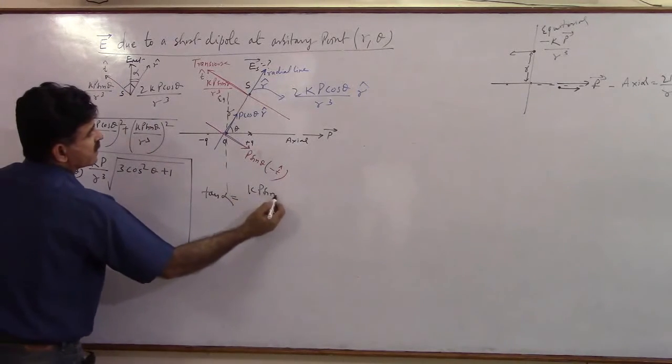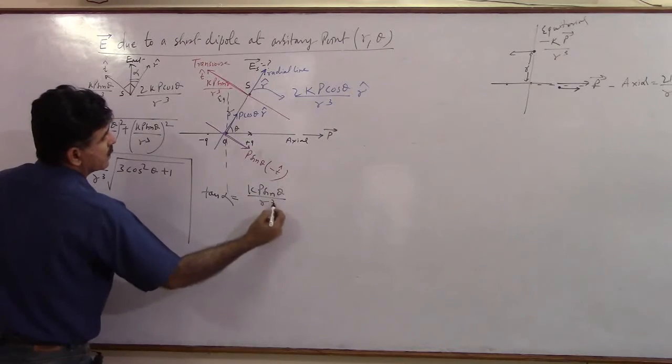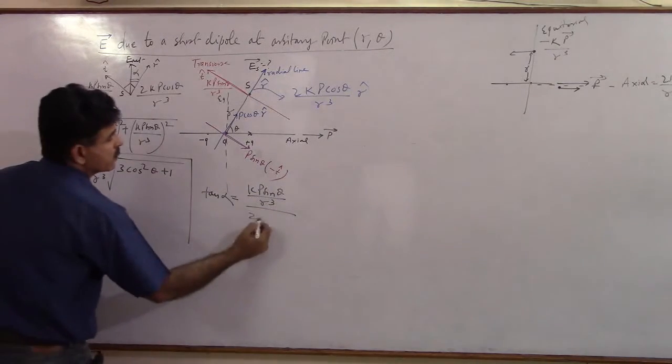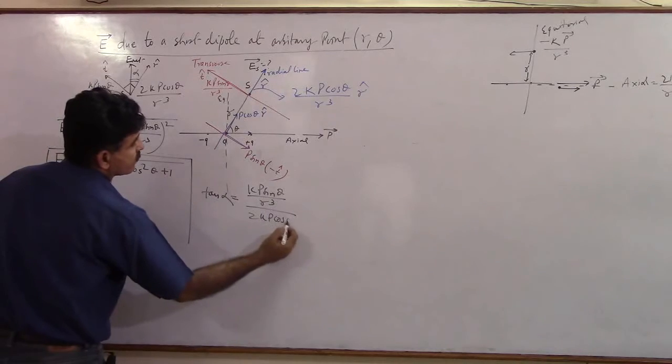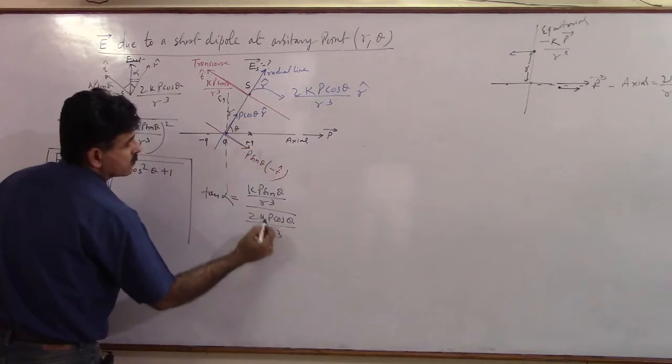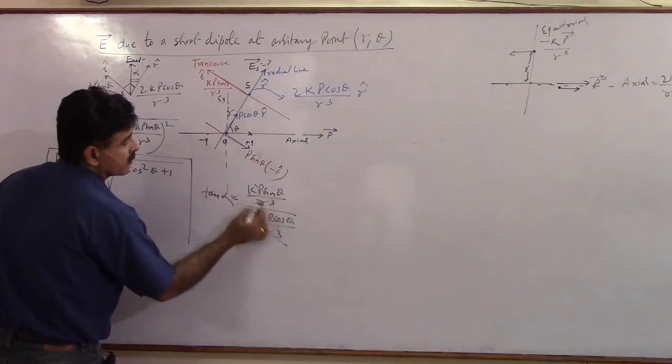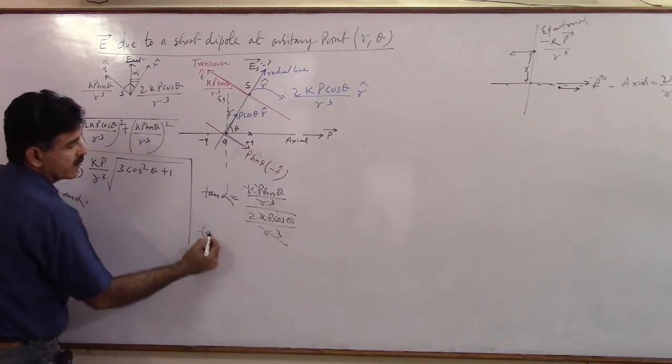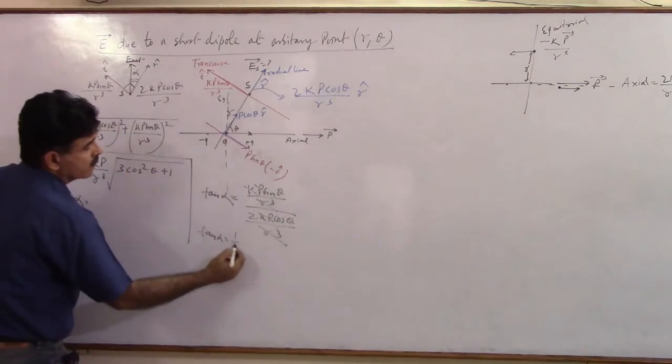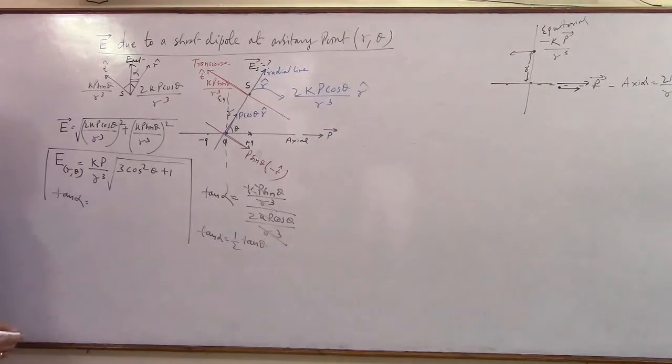So this becomes K P sin theta divided by R cube upon 2K P cos theta divided by R cube. K P R cube cancels and you get tan alpha is equal to 1 by 2 tan theta.